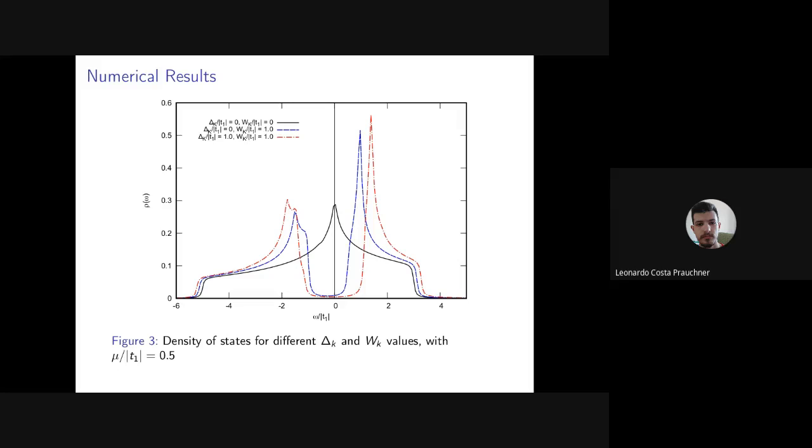In the presence, as you can see in the blue line, we have the presence of w-k, which will be the charged density wave gap. And in the red line we have the presence of both.